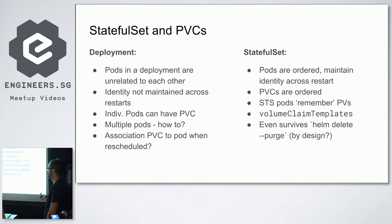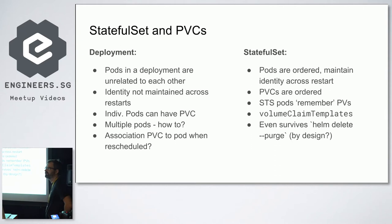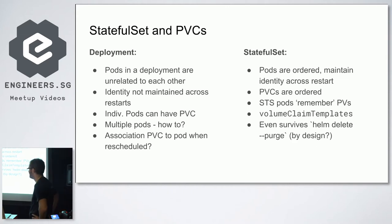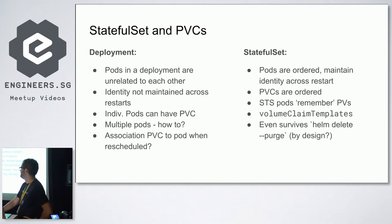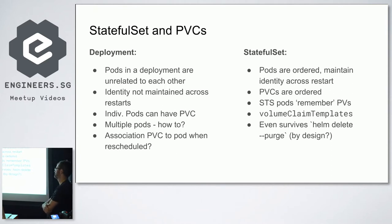Helm is a package manager for Kubernetes. Think of it as templates for Kubernetes manifests — Kubernetes manifests plus Go templates. Helm takes it beyond templating to also managing your installations, releases, rolling back, and rolling forward. It's similar to apt-get install for a cluster of machines.